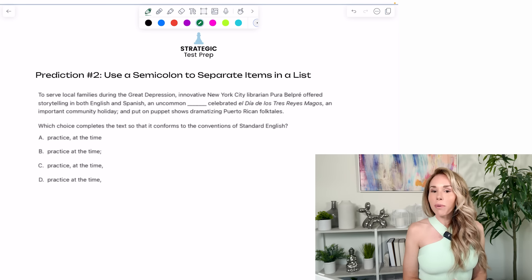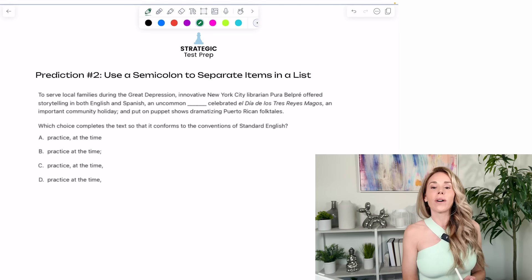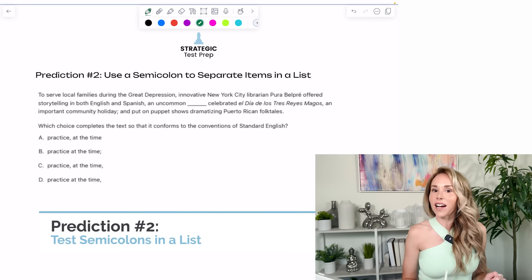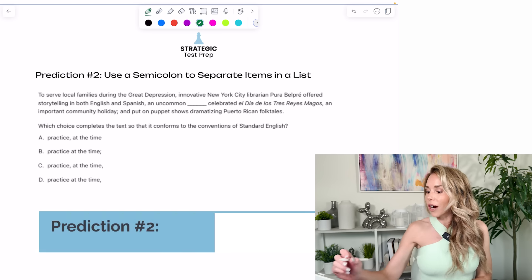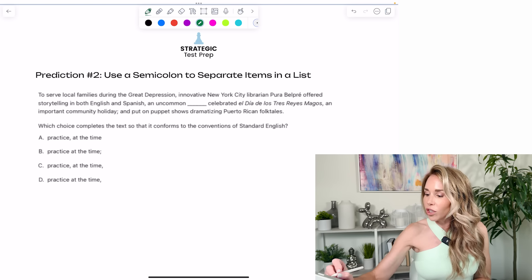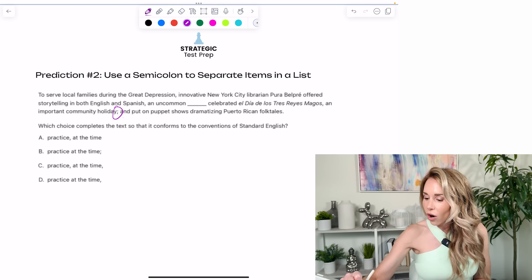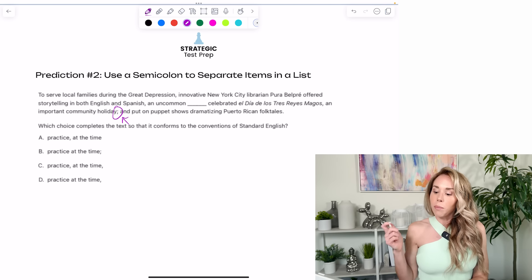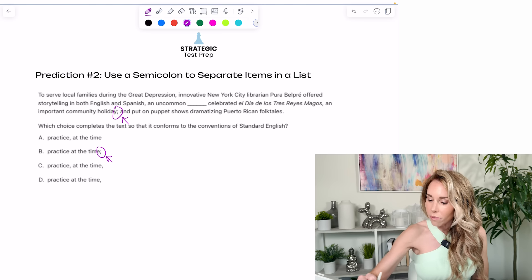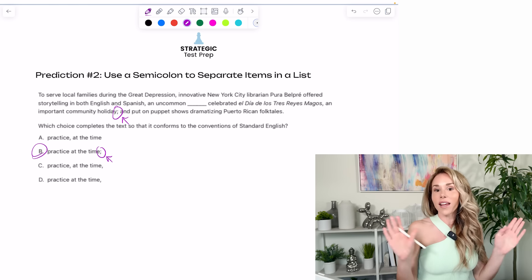My second prediction of what I think will be on the June is I think they are going to yet again test semicolons where they're separating items in a list. So if you get to a grammar question on the English and you notice that there's a semicolon already in the sentence, then pick an answer with the semicolon because they are separating items in a list.